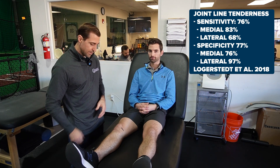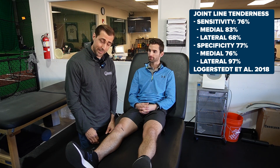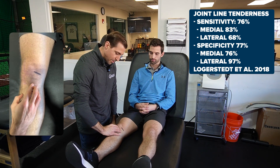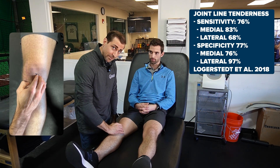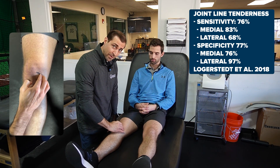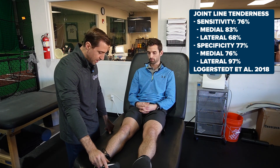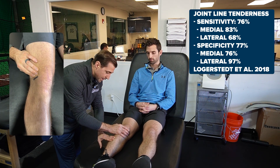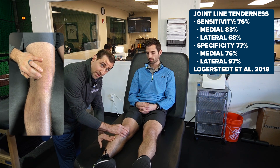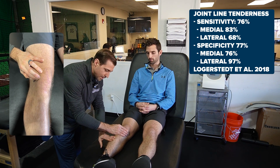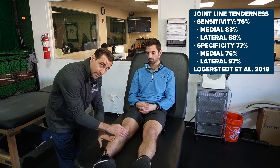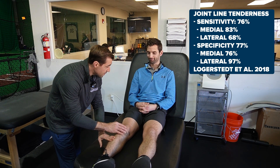Next we'll check for joint line tenderness. Have the patient sitting with the leg relaxed. To find the joint line, creep up the tibia and keep going until you feel a dip — that's your joint line — then pick up again with the femur. Do the same on the outside. Poke through the joint line and ask: does this reproduce your familiar symptoms? If it doesn't, that's a negative test for meniscus pathology via joint line tenderness.